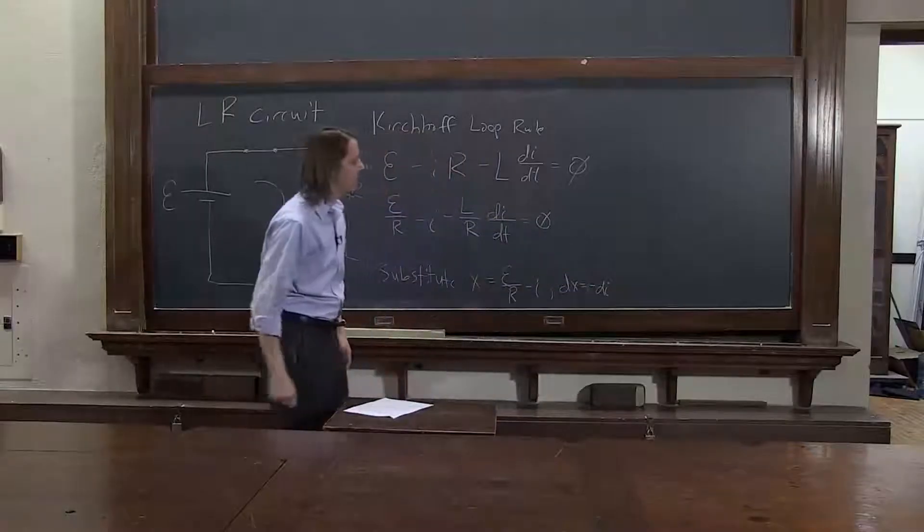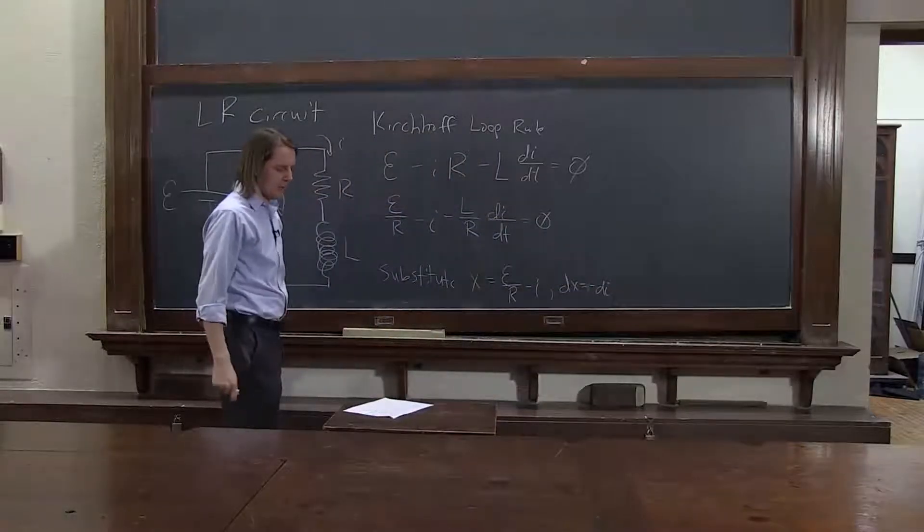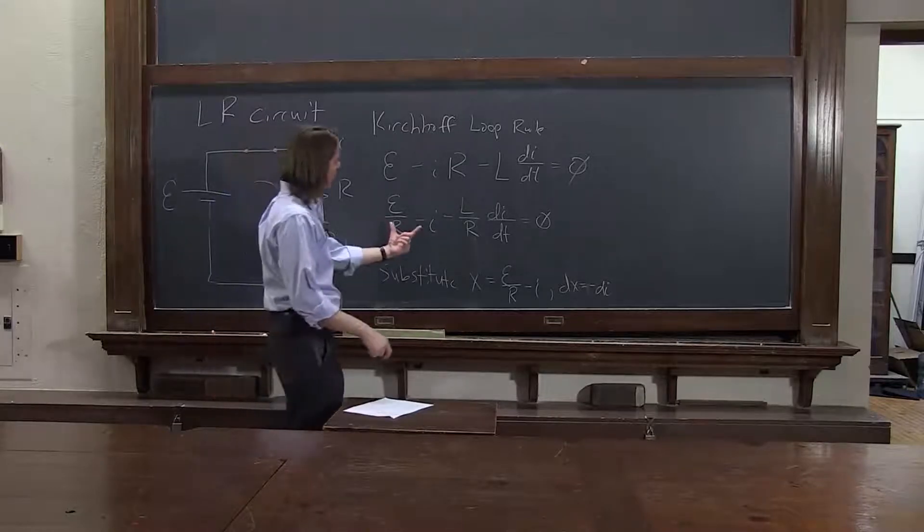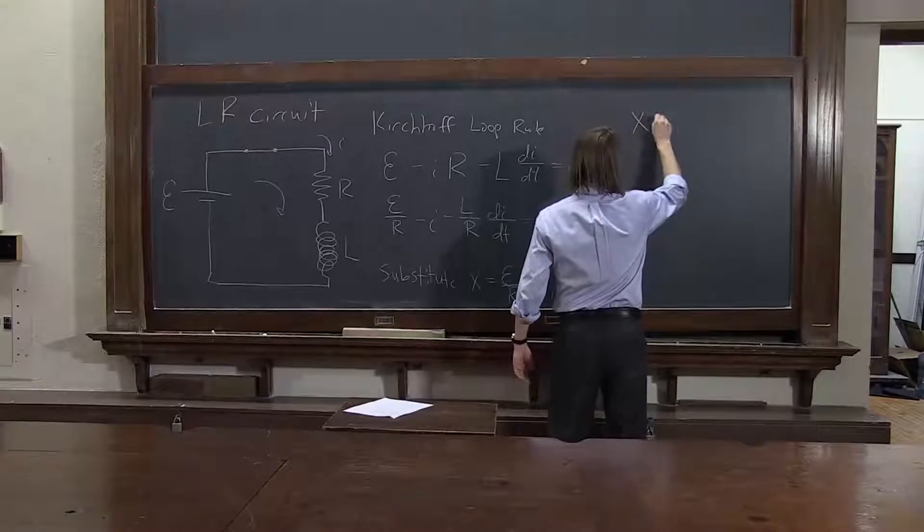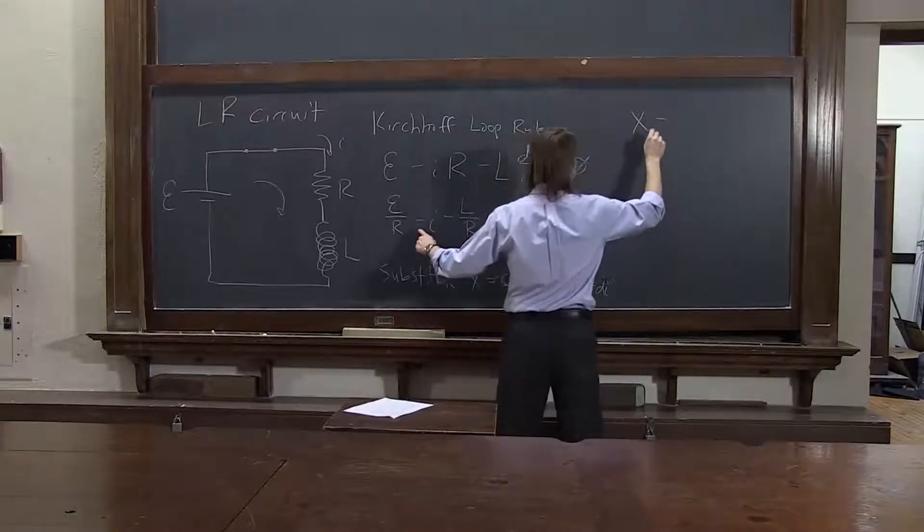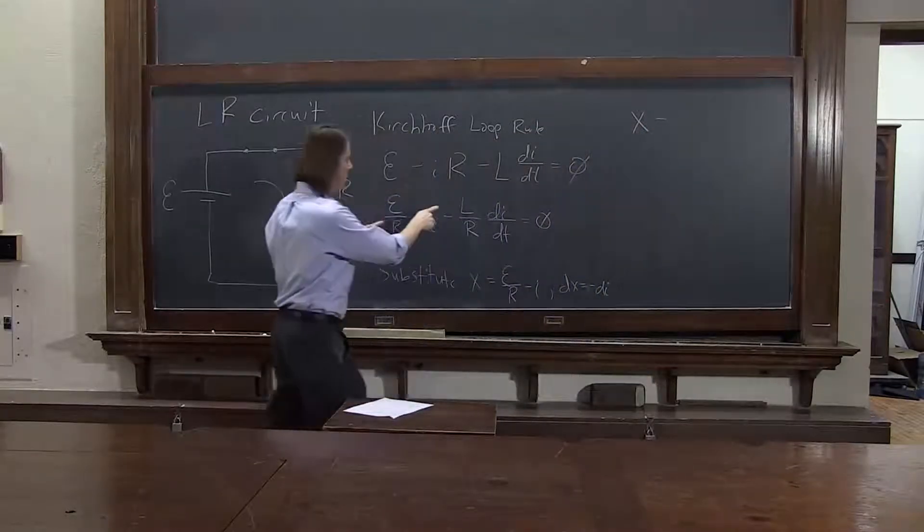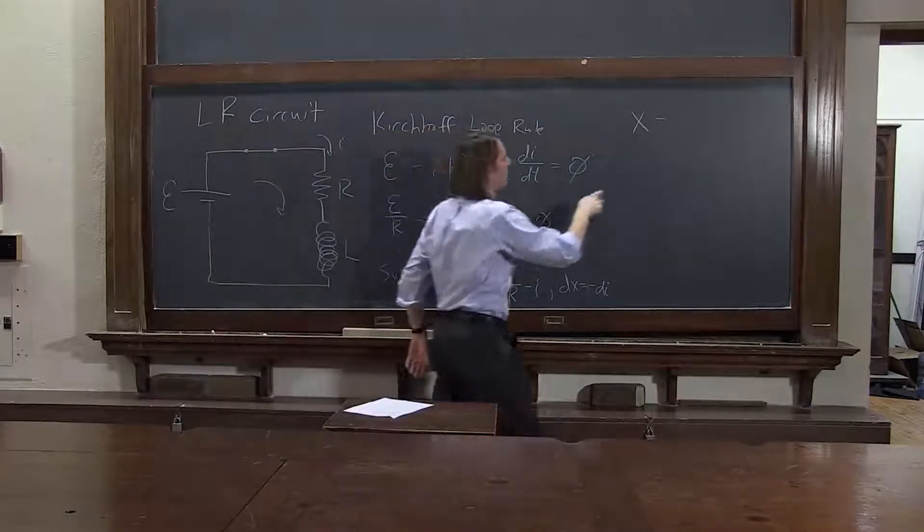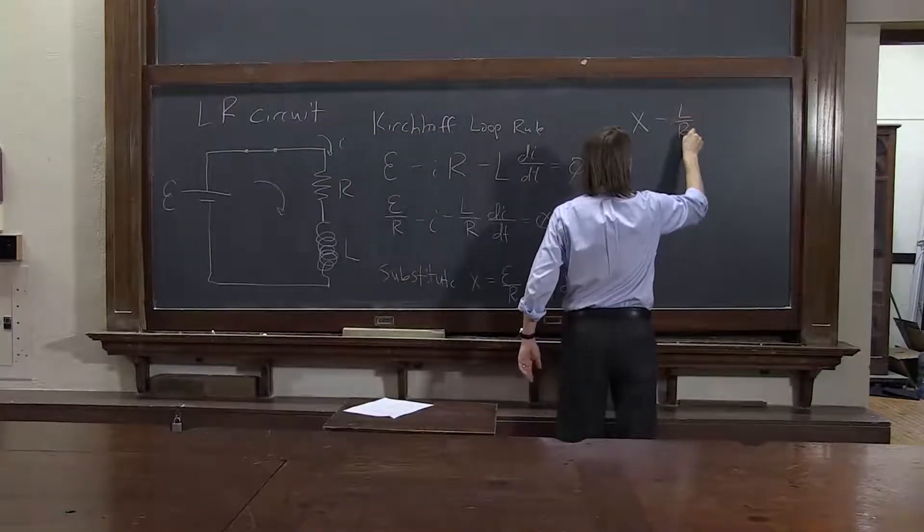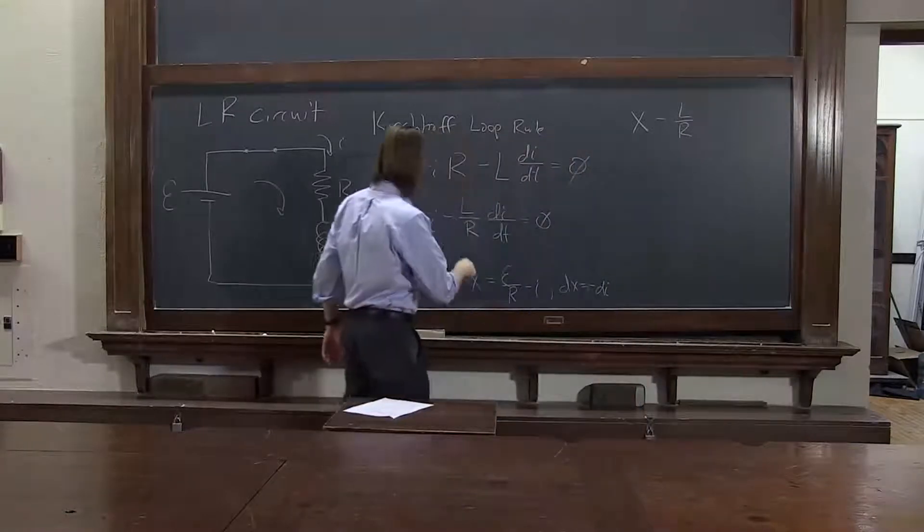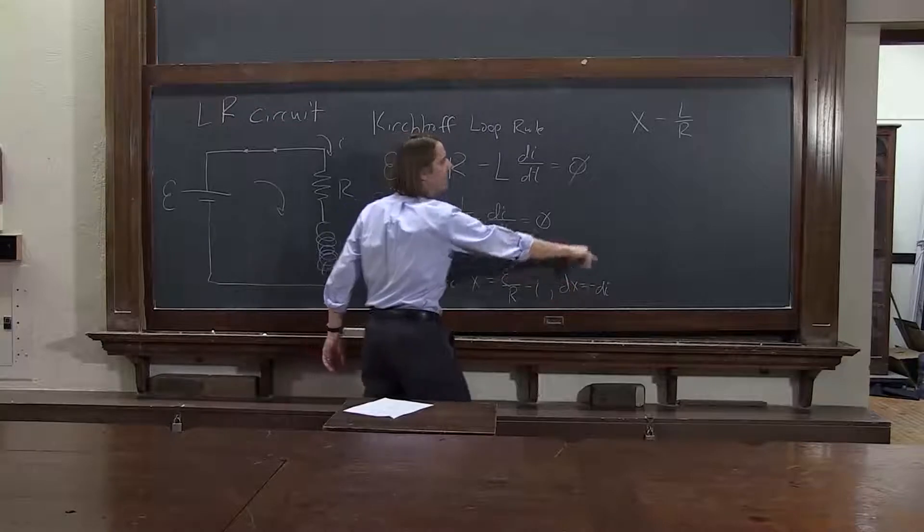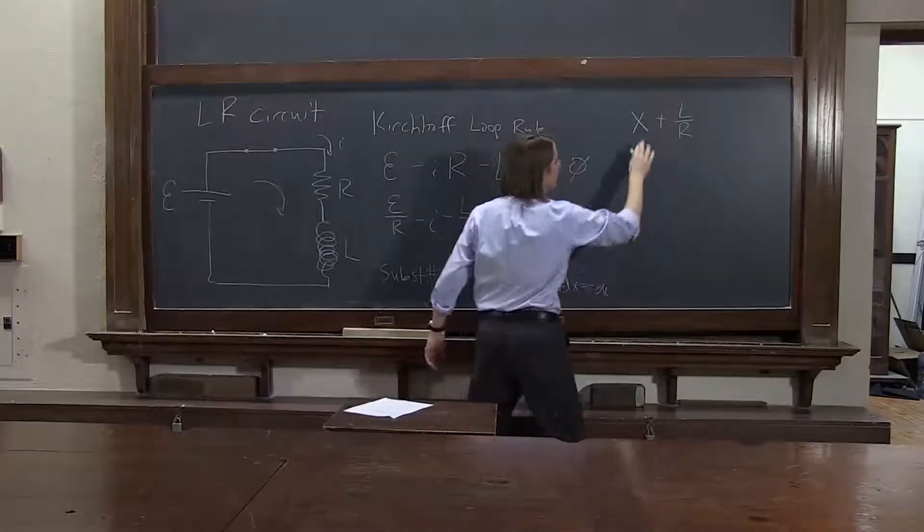If you bring it back around, you'll just get dx is minus di. So if we make that substitution, we can rewrite this thing as here is x. And so x is EMF over R minus I, and then minus L over R. And then this is di dt. Well, if we want to change that to x, there's actually a negative sign. It has to get changed, and it just becomes dx dt.